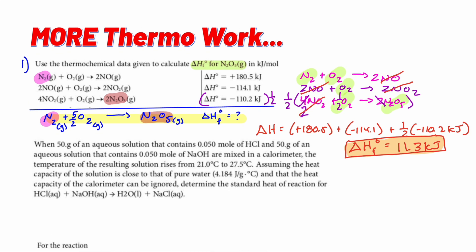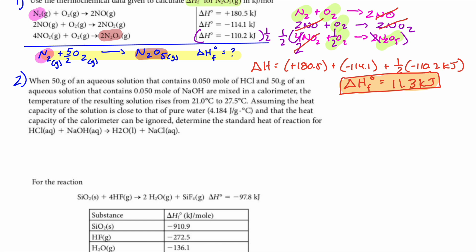Number two: 150 grams of aqueous solution containing 0.05 mol HCl and 50 grams of aqueous solution containing 0.05 mol NaOH are mixed in a calorimeter. The temperature of the resulting solution rises. The heat capacity of the solution is close to that of pure water, and the calorimeter absorbs no heat. Determine the standard heat of reaction.